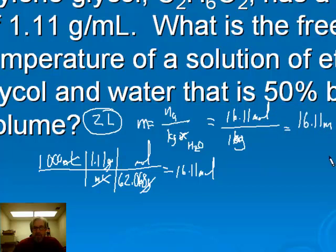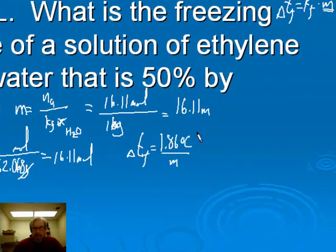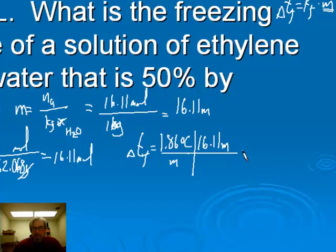Now we can find the freezing point depression. ΔTf equals 1.86 degrees C per molal — that's the Kf for water, which is the solvent here — times our molality of 16.11 molal. After canceling off molality, that gives us 30 degrees Celsius. So the freezing point is now negative 30, because water normally freezes at zero.